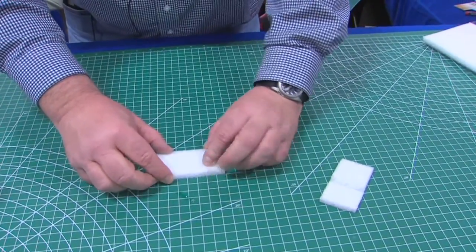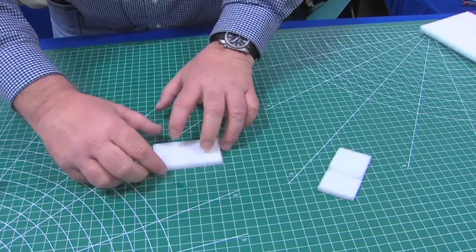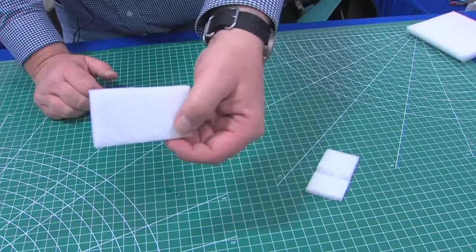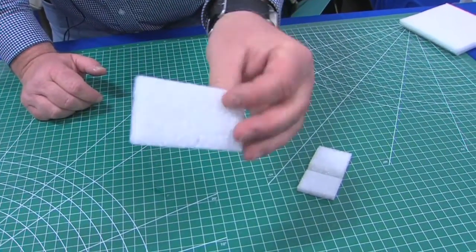Now the butt joint, you put it together. Same thing, rub your finger on it. You won't even see the break after a while. This will be stronger than the actual foam itself. It will not tear apart.